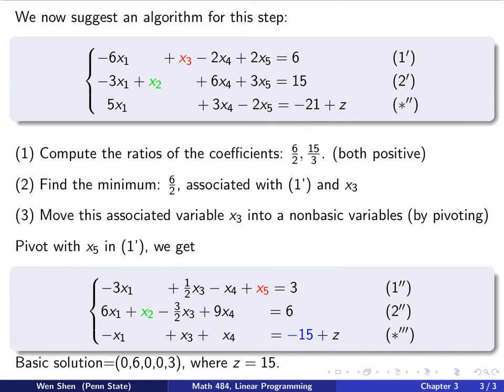So now we get this new canonical form of our linear programming problem, and you can see that the new basic variables are x2 and x5, and the basic solution is x5 is 3, x2 is 6, and all the others are 0, which we wrote here, and the value of z is this term here, the negative of this term, because the left-hand side is 0. So z is 15.